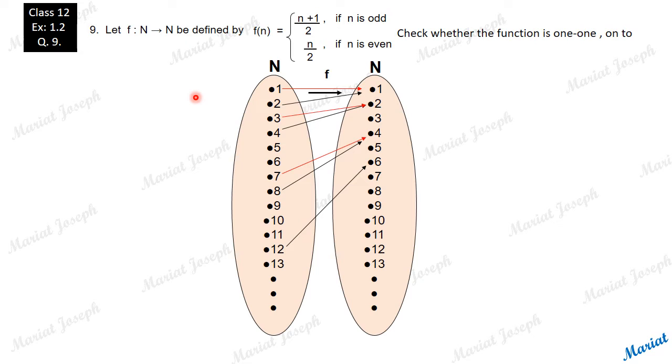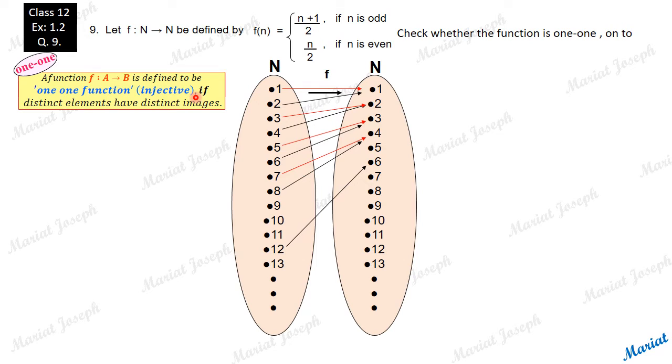Image of 3 is 2. Image of 6 is 3. Image of 5 also is 3, etc.